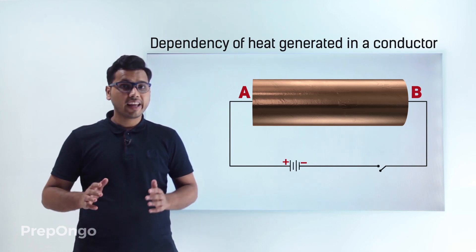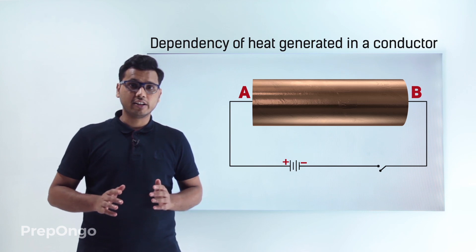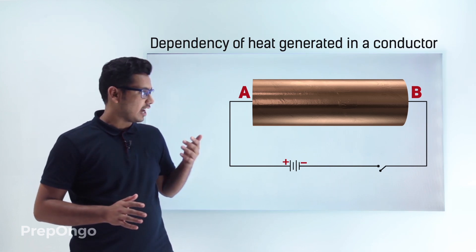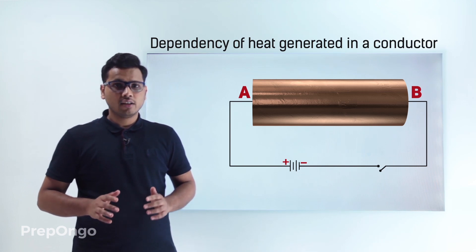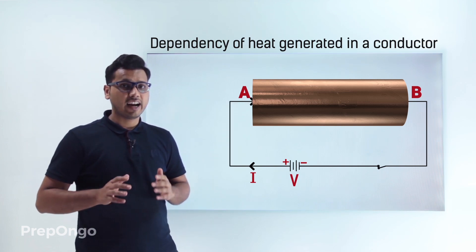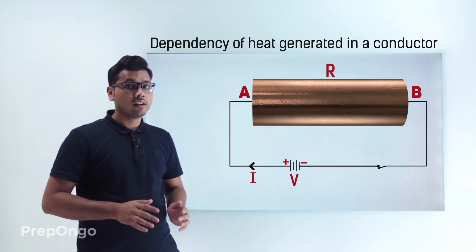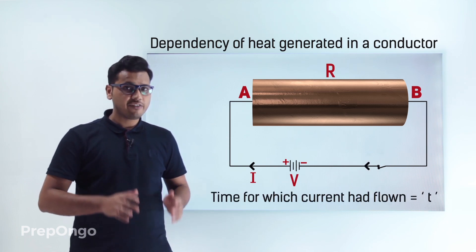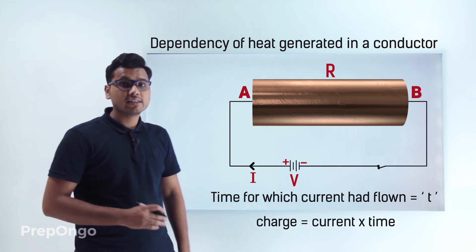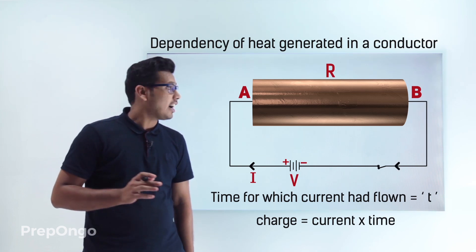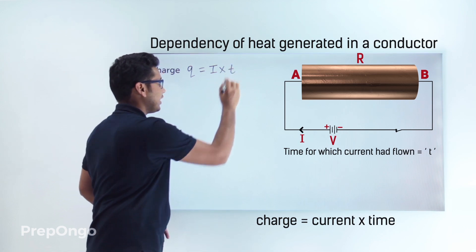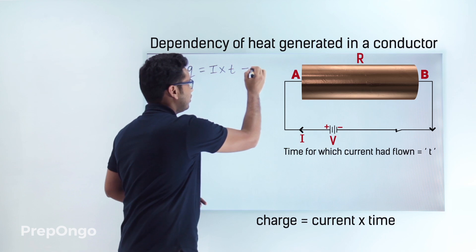As we know, metallic conductors offer some resistance to the flow of current through them, and some energy is always utilized to overcome this resistance and to maintain the flow of current through the conductor. Let's say that potential V is applied to this metallic conductor, which flows current I through it, the resistance of this conductor is R, and the current flows for time t. We can find out the amount of charge that flowed: Q = I × t. Let's call this equation number 1.